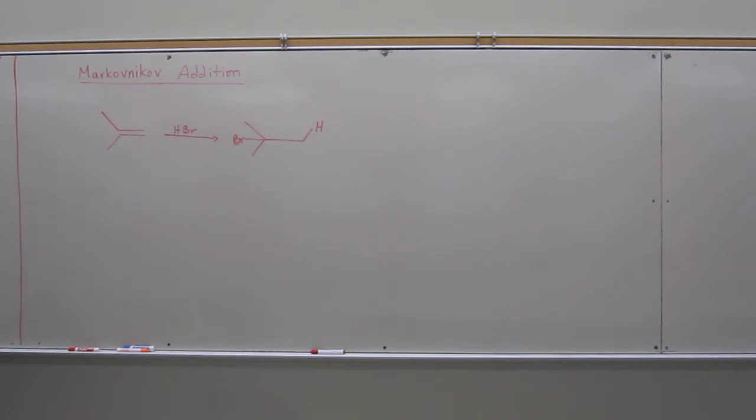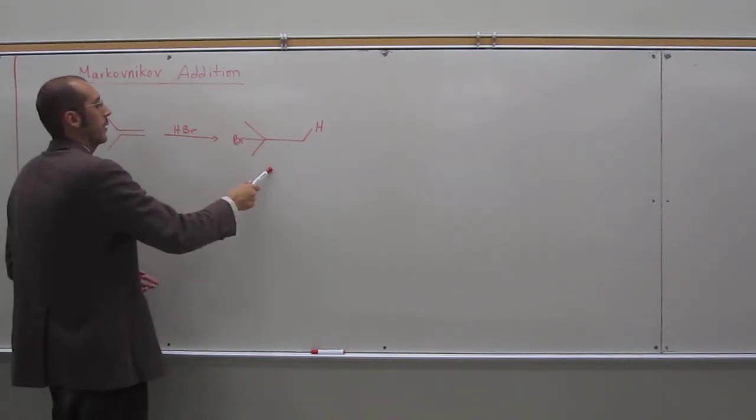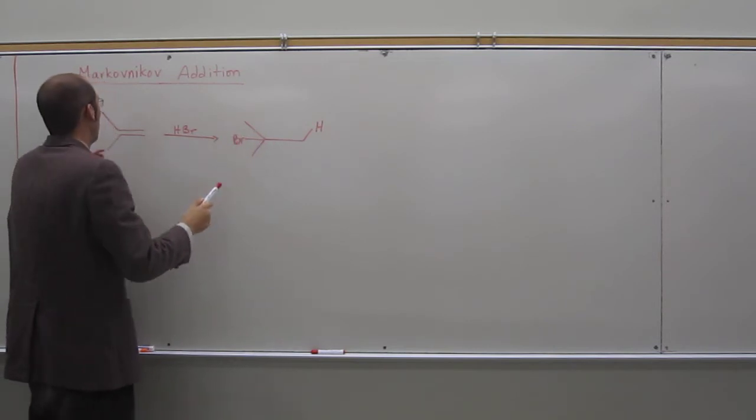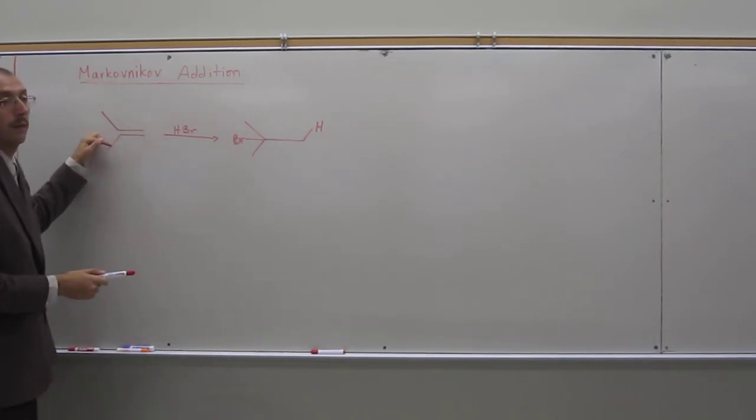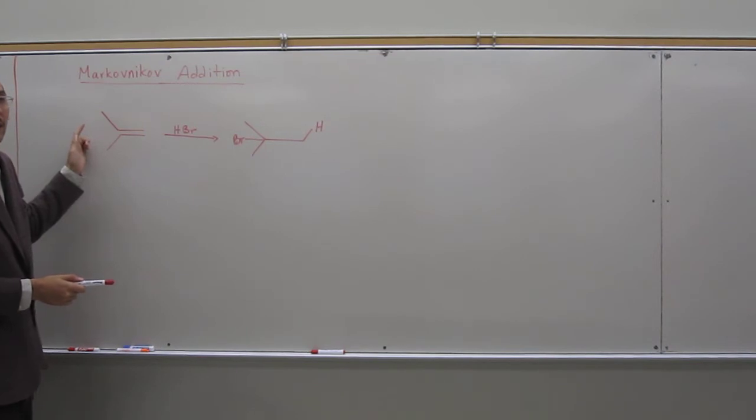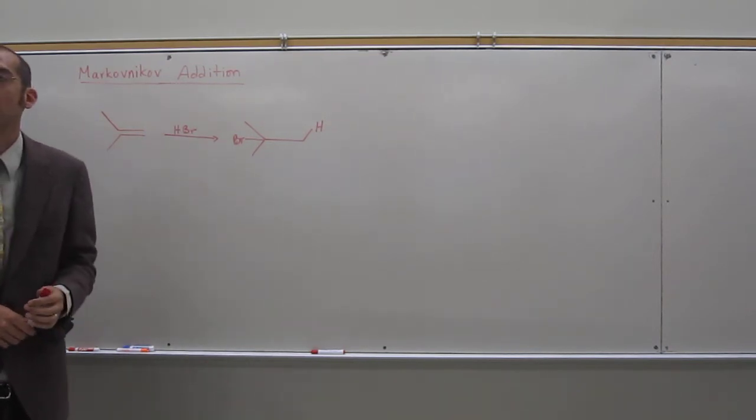So this is the Markovnikov addition of HBr to an alkene. You can see the reactants, you can see the products. Notice that the bromine went to the more substituted side of the alkene, and the hydrogen went to the less substituted side.